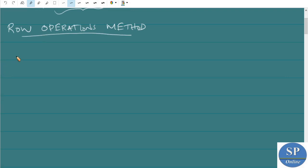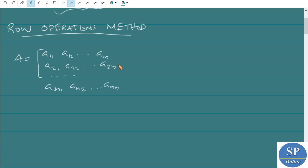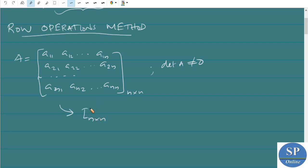Suppose we have a matrix A of entries a11, a12, ... a1n, a21, a22, ... a2n, and so on to an1. So A is an n×n matrix such that det(A) ≠ 0. From the previous theorem, A has an inverse. If we can convert this matrix A into an identity matrix of order n by using row operations, then we can find the inverse of A.